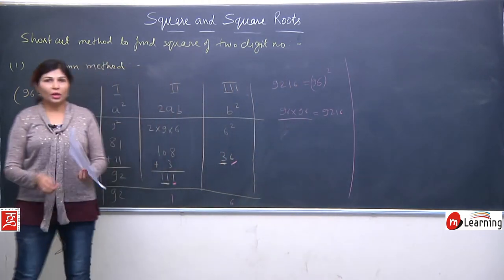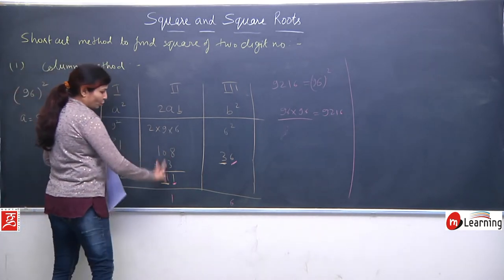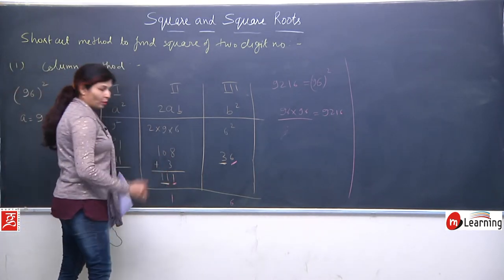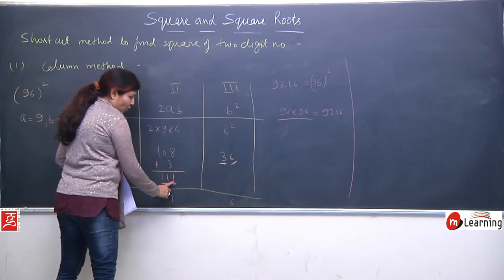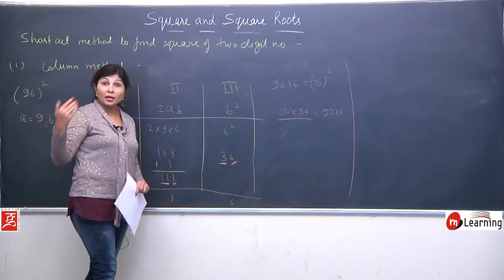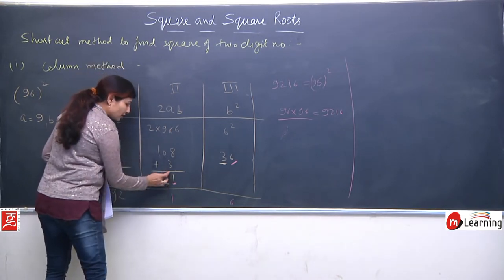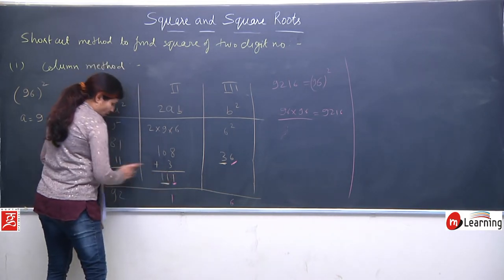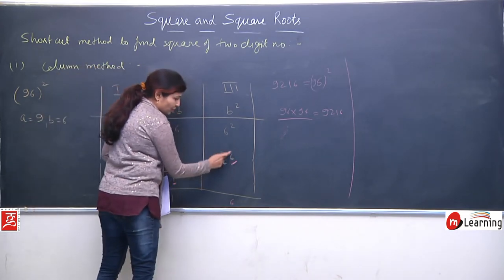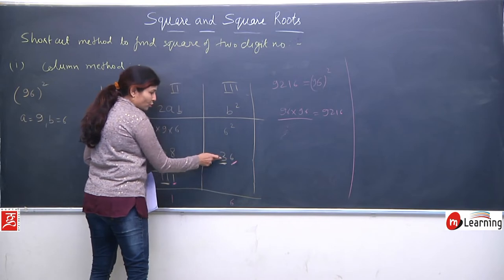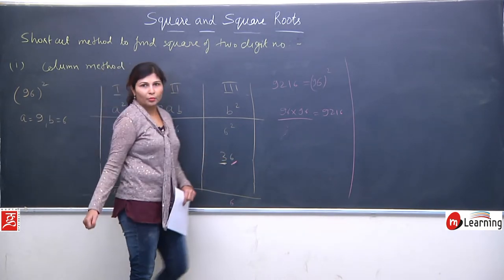To summarize the column method: whatever result appears in each column, split it into two parts — the unit place digit, which goes into the answer, and the remaining left digits, which get carried and added to the next column on the left. The leftmost column is taken fully as-is in the answer.